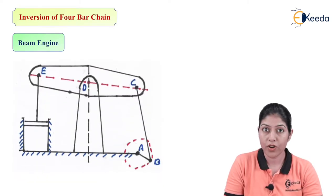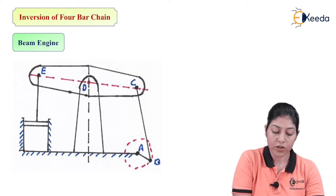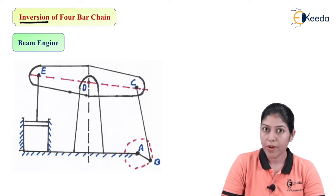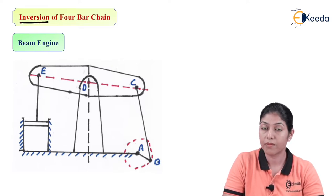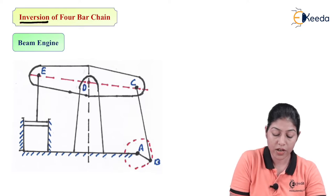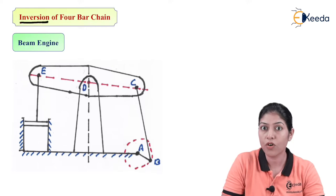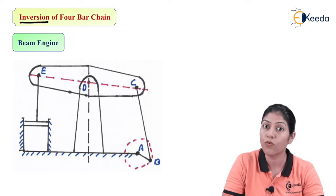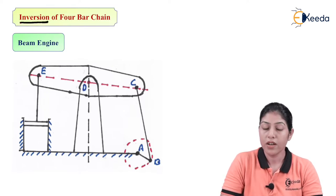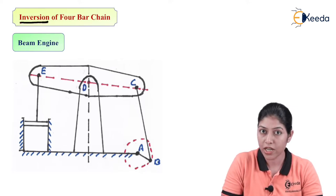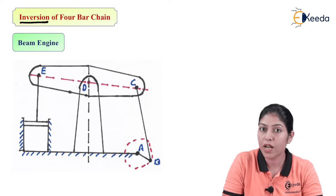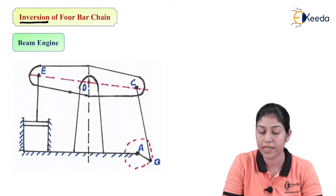Now let's discuss different inversions of the four-bar mechanism or four-bar chain. In a kinematic chain, fixing one link makes it a mechanism, but fixing different links to define different types of mechanisms is called inversion. Here we will consider the four-bar chain with a maximum of four links. For five-bar or six-bar chain mechanisms there are other mechanisms, but here I will discuss four-bar chain and its inversions only.